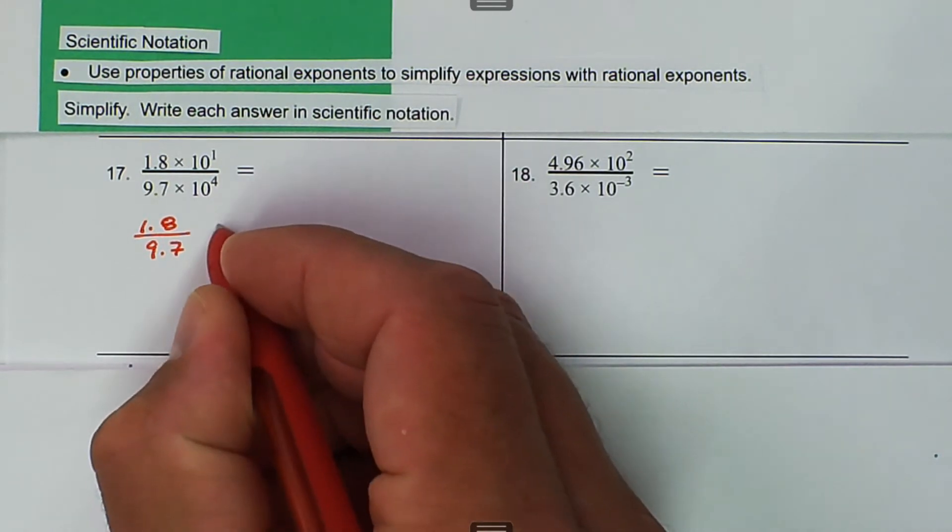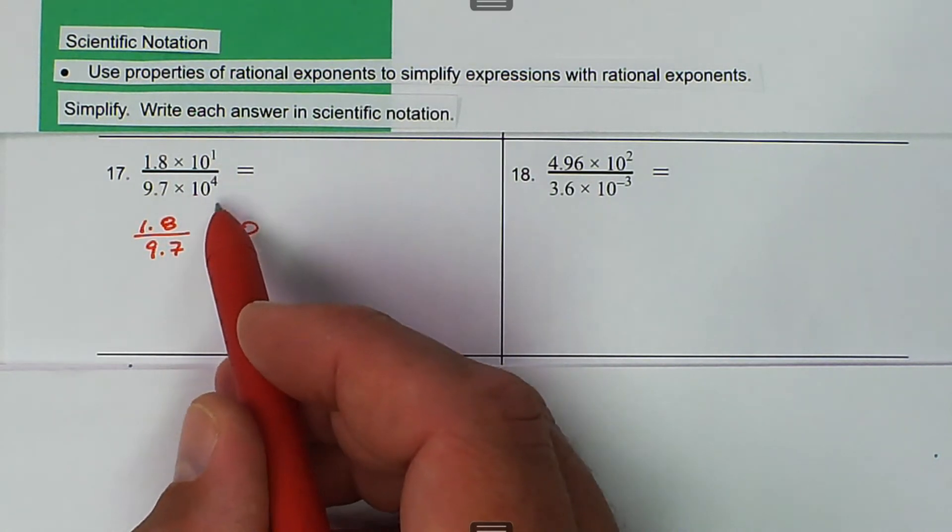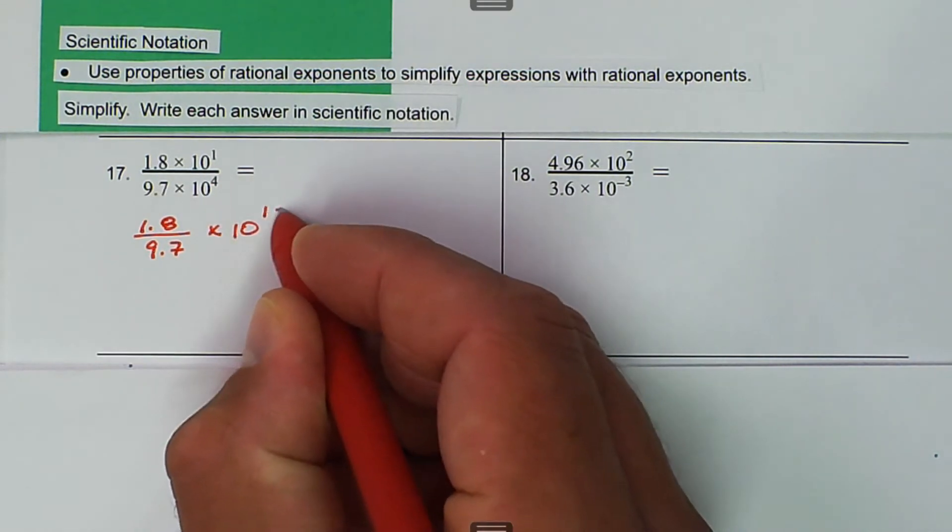We're still going to multiply that by 10, but because 10^1 and 10^4 have the same base of 10, we can use our quotient rule for exponents. If they're the same base in the numerator and denominator, we can subtract those exponents. So we get 1 minus 4.